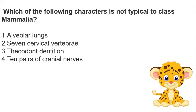Next question: which of the following characters is not typical to class Mammalia? Options are 7 cervical vertebrae, warm-blooded, or 10 pairs of cranial nerves. The answer is 10 pairs of cranial nerves — this is not typical to class Mammalia.